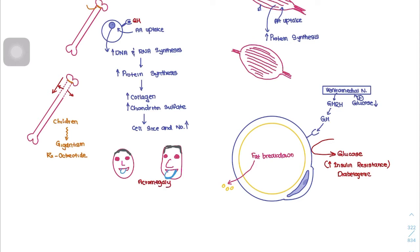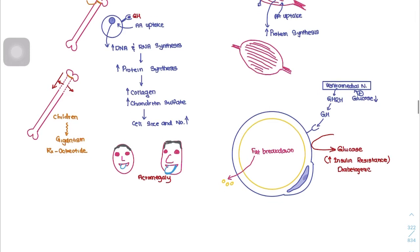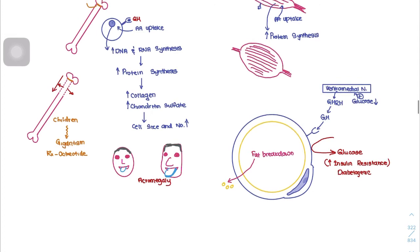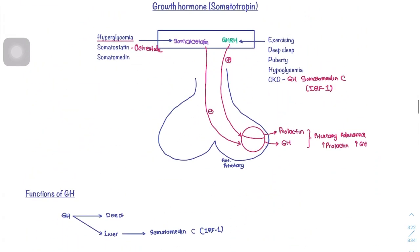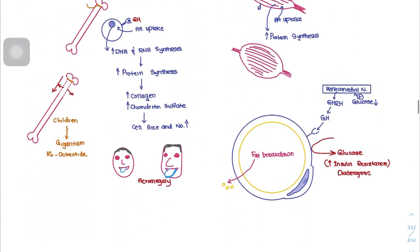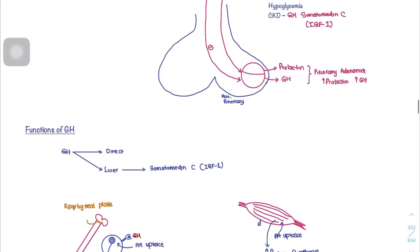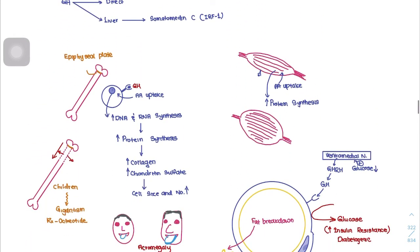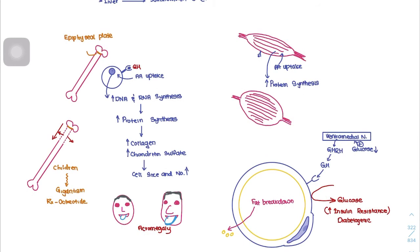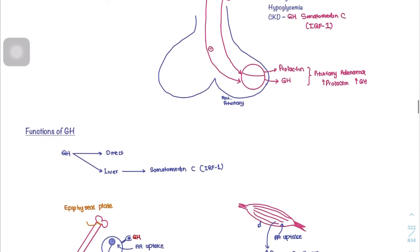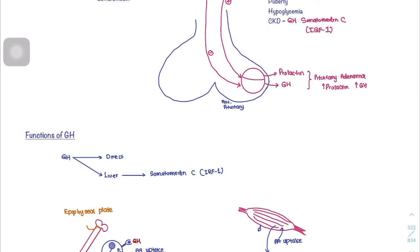In acromegaly, the bones of the face are most prominently thickened, and soft tissues such as the tongue become very thick. The treatment for both gigantism and acromegaly is the somatostatin analogue octreotide, which inhibits the release of growth hormone and stops this entire cycle. This can be seen in pituitary adenomas, so another treatment option is surgical removal of the adenoma.